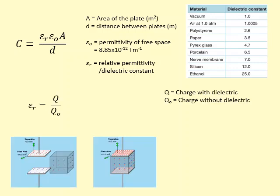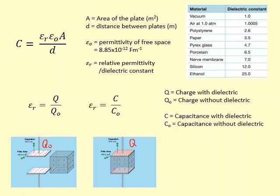Another way of finding the relative permittivity is Q over Q₀, where Q₀ is the charge stored without the dielectric and Q is with the dielectric — you can see that with the dielectric you've got more charge. Another equation is C over C₀, where C is the capacitance with the dielectric and C₀ is without the dielectric.